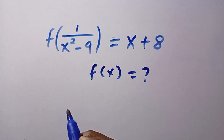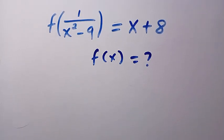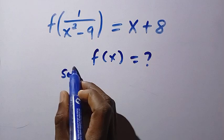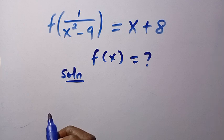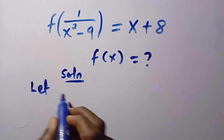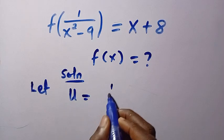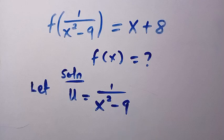We are given f of 1 divided by x squared minus 9, equals x plus 8. To solve this, let's consider the solution from here. Suppose I let u equals 1 divided by x squared minus 9, so it becomes f of u equals x plus 8.